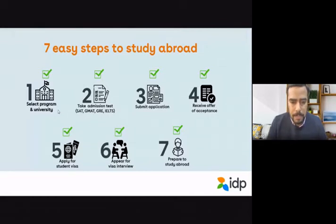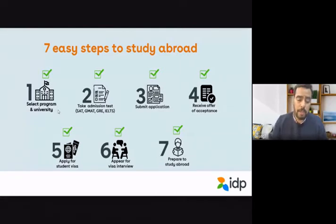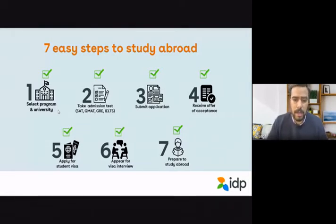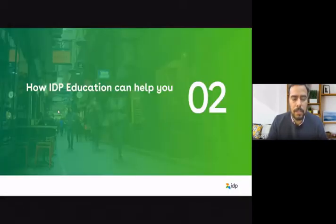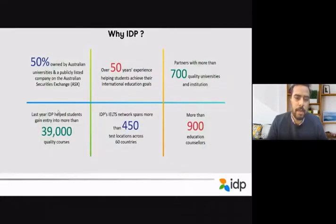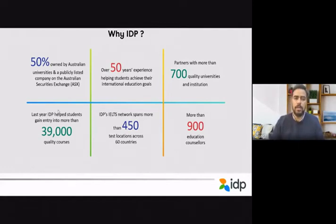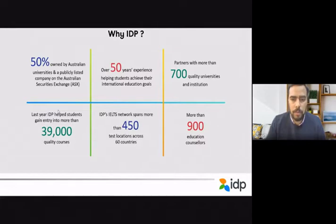The next step is to appear for a visa interview — some destinations require interviews, some do not, and we prepare students with mock interviews. Last is to prepare to study abroad through a pre-departure seminar we conduct, covering how to open a bank account, accommodation, and all relevant steps. As for why IDP: we are 50% owned by Australian universities, listed on the Australian Stock Exchange, have been doing this for 50 years, and have partnered with over 700 quality universities globally. Last year IDP helped students gain entry into more than 39,000 quality courses.